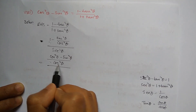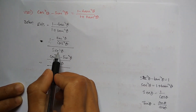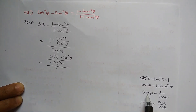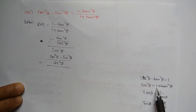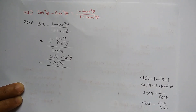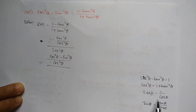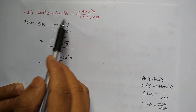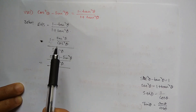We use cos, sorry, sec squared theta. Sec squared theta is a formula, and we use 1 by cos theta and sec squared theta as a formula. We use this equation, applying the formula with 1 by cos theta, with the same value, to prove left hand side equals right hand side.